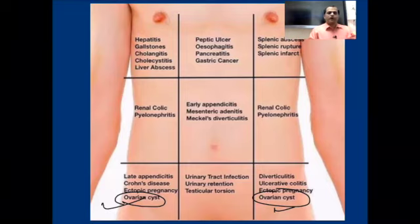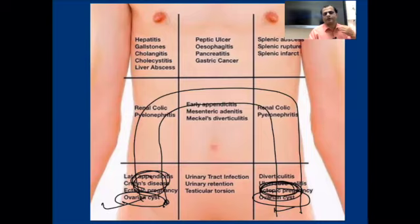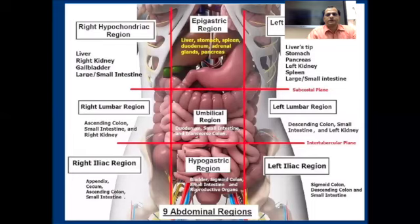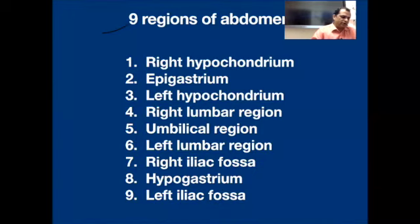The intestine runs through multiple regions, so intestinal pain affects a wide central area. In this way, we have mapped all organs to the nine quadrants of the abdomen. So ultimately we have nine quadrants, and each quadrant corresponds to specific organs and their associated pain regions.